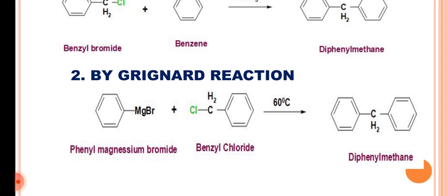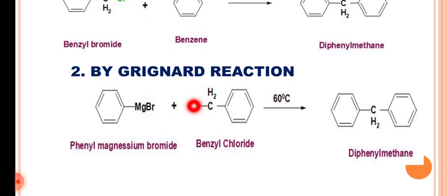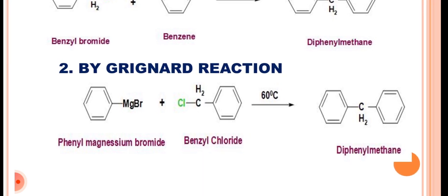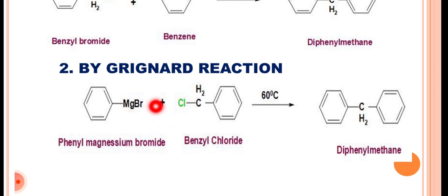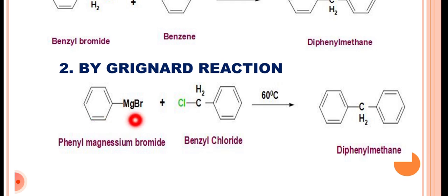The second synthesis is by the Grignard reaction. As you all know, for the Grignard reaction the starting material is alkyl magnesium halide. Here, to synthesize diphenylmethane, we will use phenyl magnesium bromide, which in turn can be prepared from bromobenzene and magnesium.